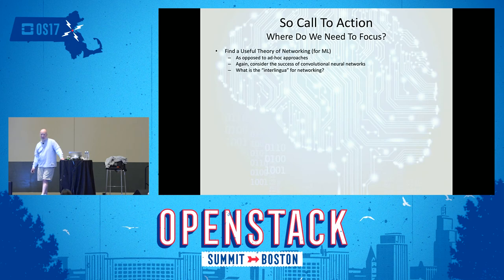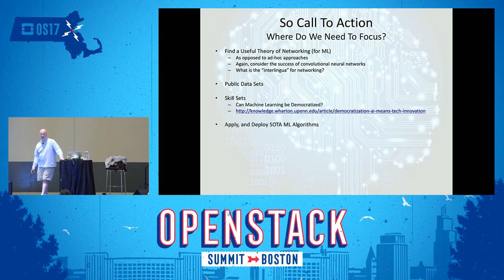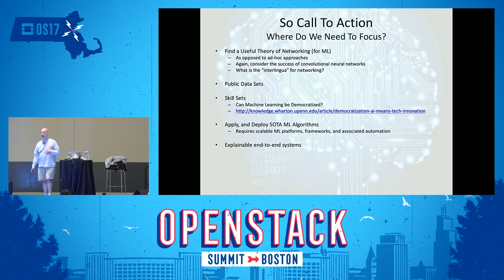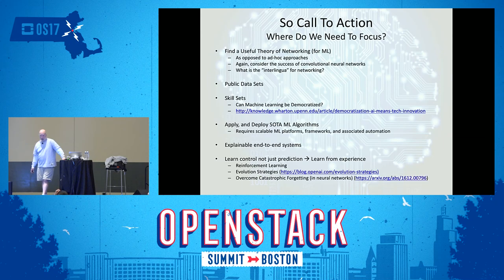What do we need to do? We need to find a useful theory of networking. We need public data sets. We need to hone up our skill sets. We need to apply state-of-the-art machine learning algorithms — we can't be stuck back in the 80s, 90s, 2000s. We need explainable end-to-end systems — network operators aren't going to like neural nets where you don't really know what they're doing. We need to learn control and not just prediction, and learn from our environment in an ongoing way.